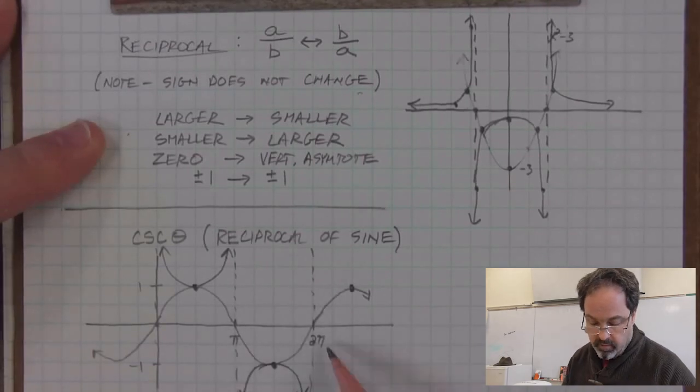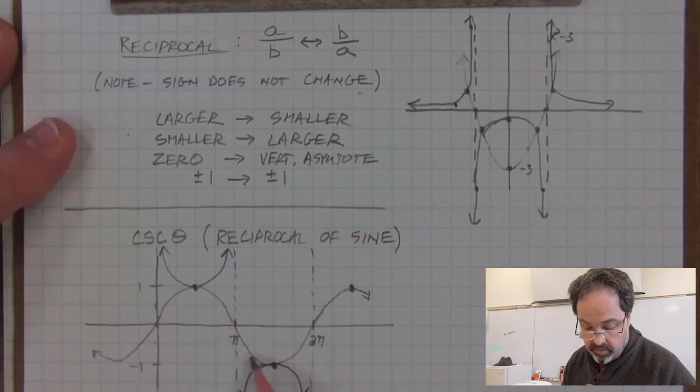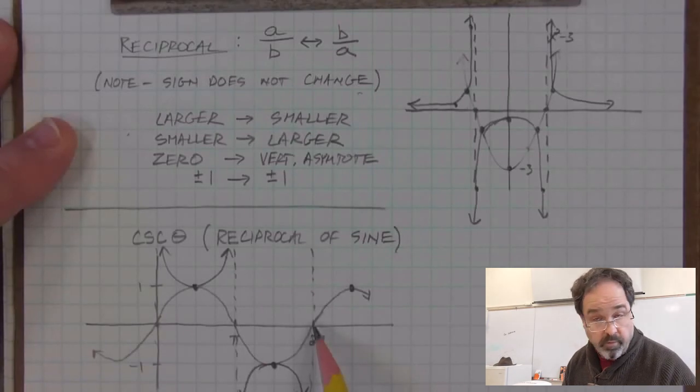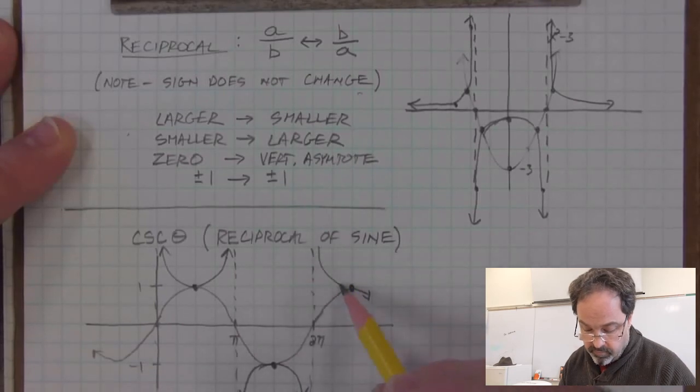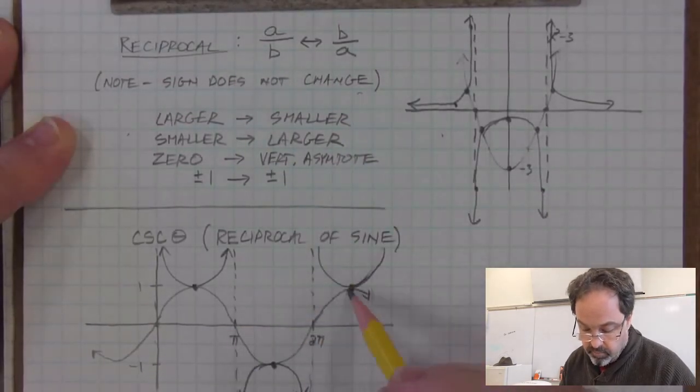Now, sine is periodic, so as this pattern in sine repeats, so will the graph of the reciprocal. So if I have these two curves, it's going to be the same curve because sine's shape repeats.